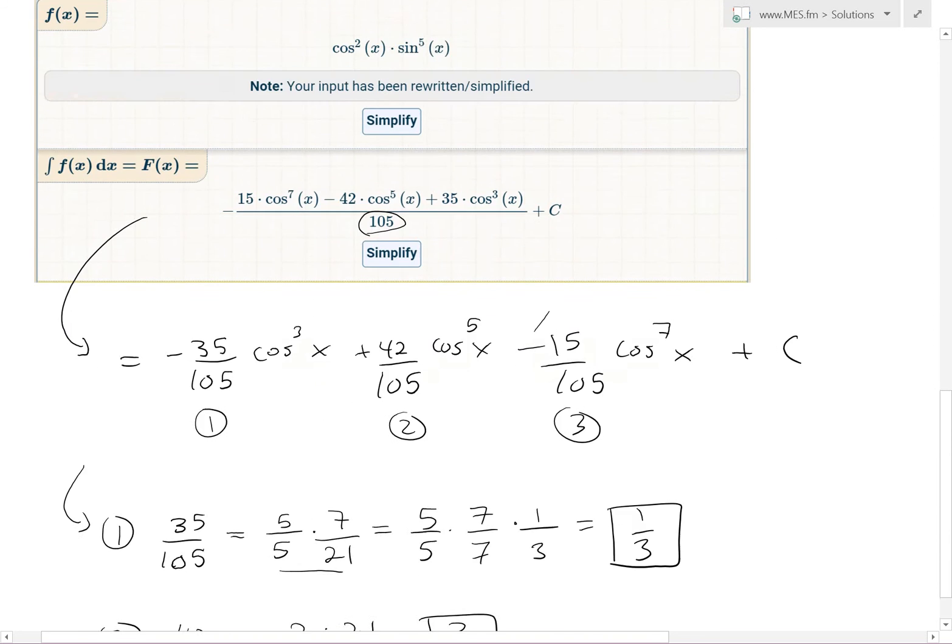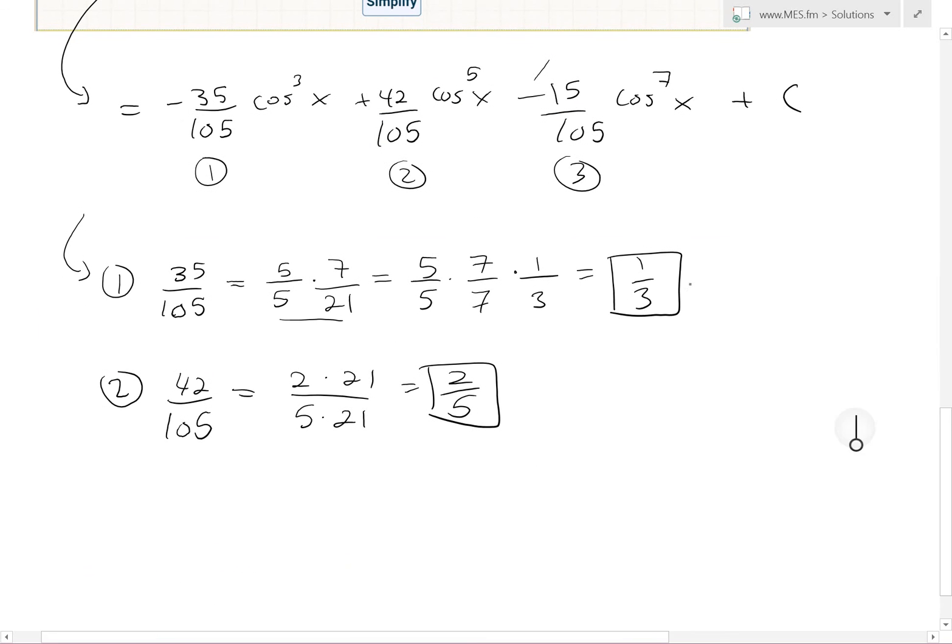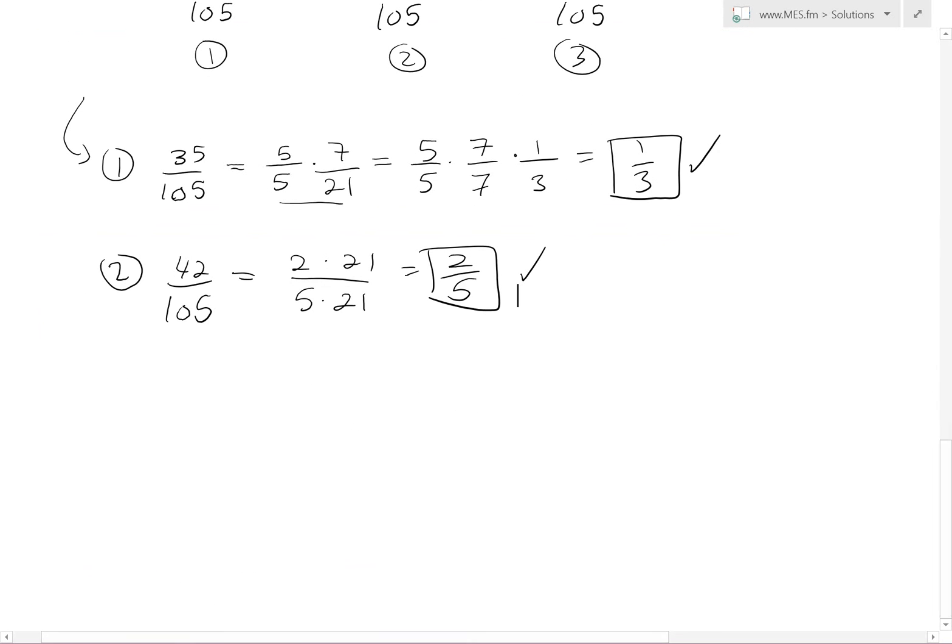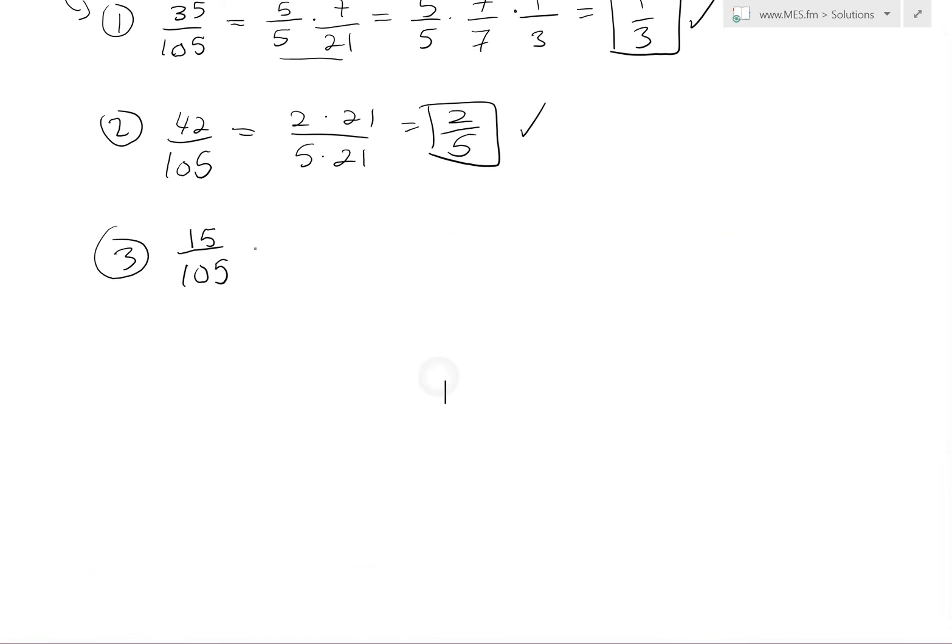And as you can see right here, there's a 1 over 3, 2 over 5, so these are the same answer. And then the last one, 15 over 105, this is the easier one. We take out 5 from both, so 5 and 5 times it by, well, this is going to be 3 over 21.